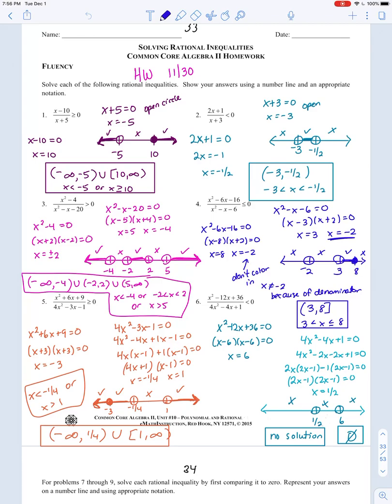But negative two cannot be colored in because the denominator trumps it. The denominator is the more important thing. Open circle for that. So that was a little weird.